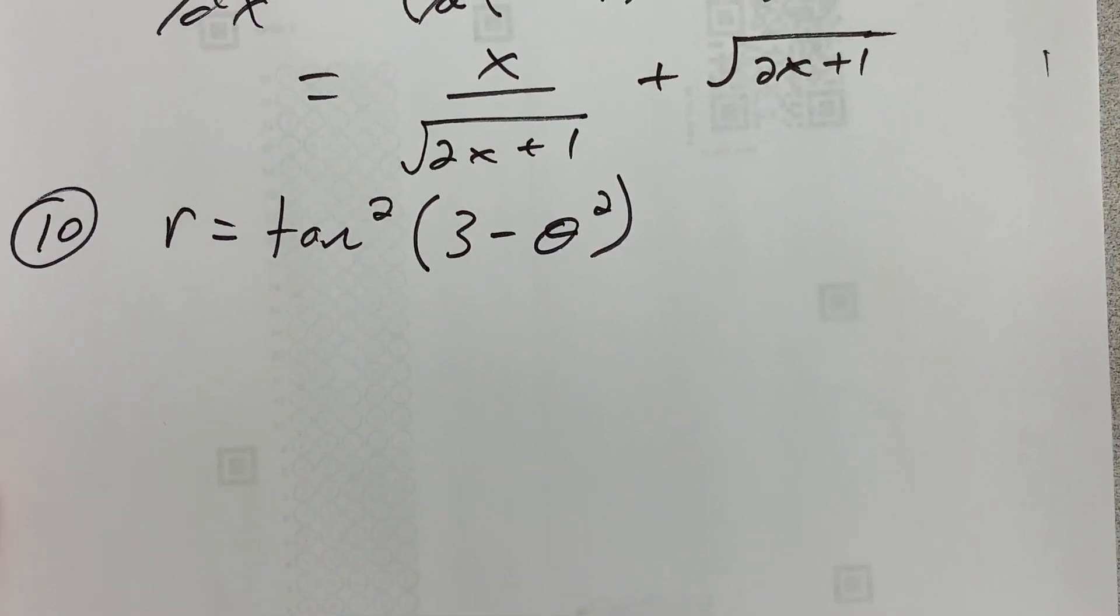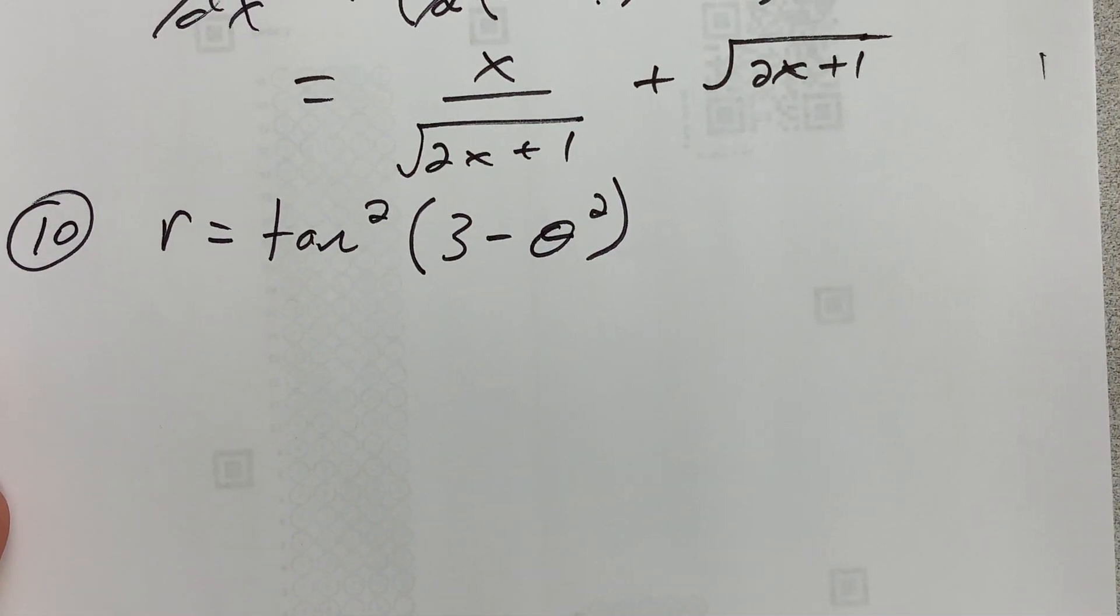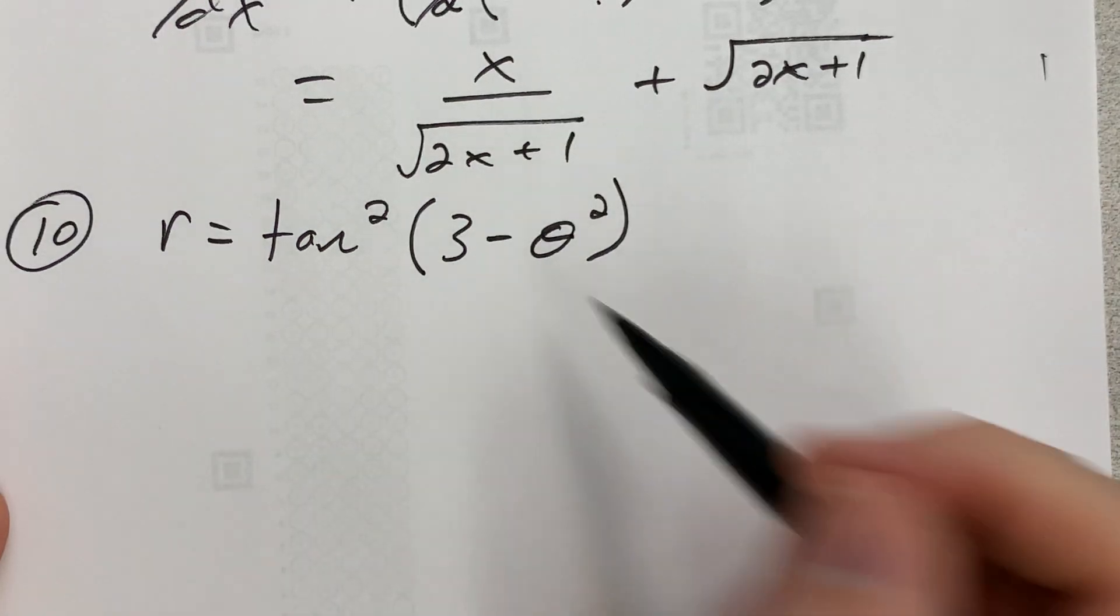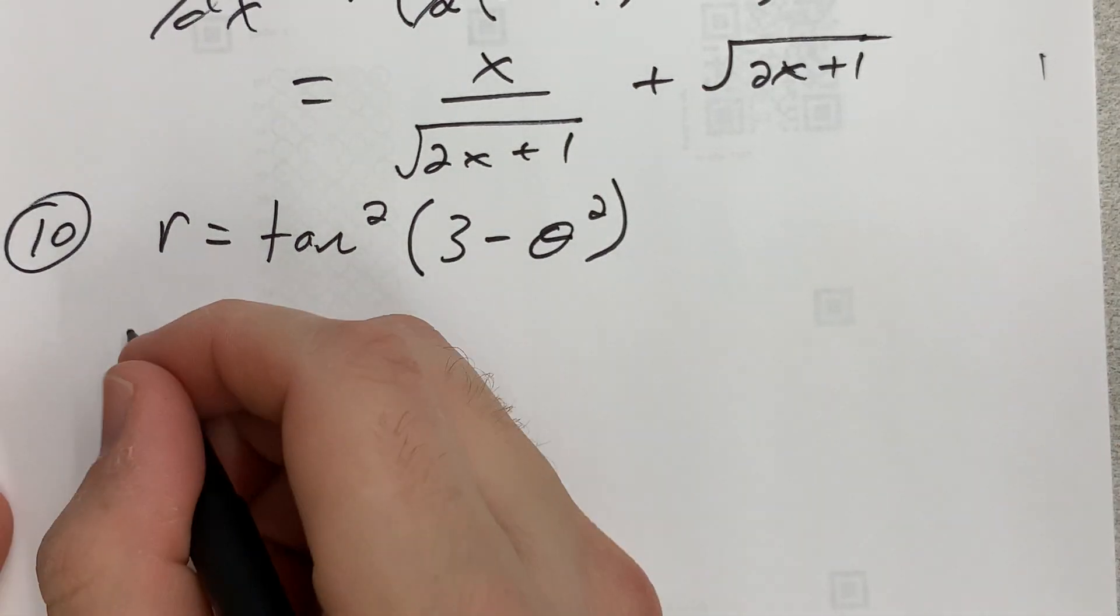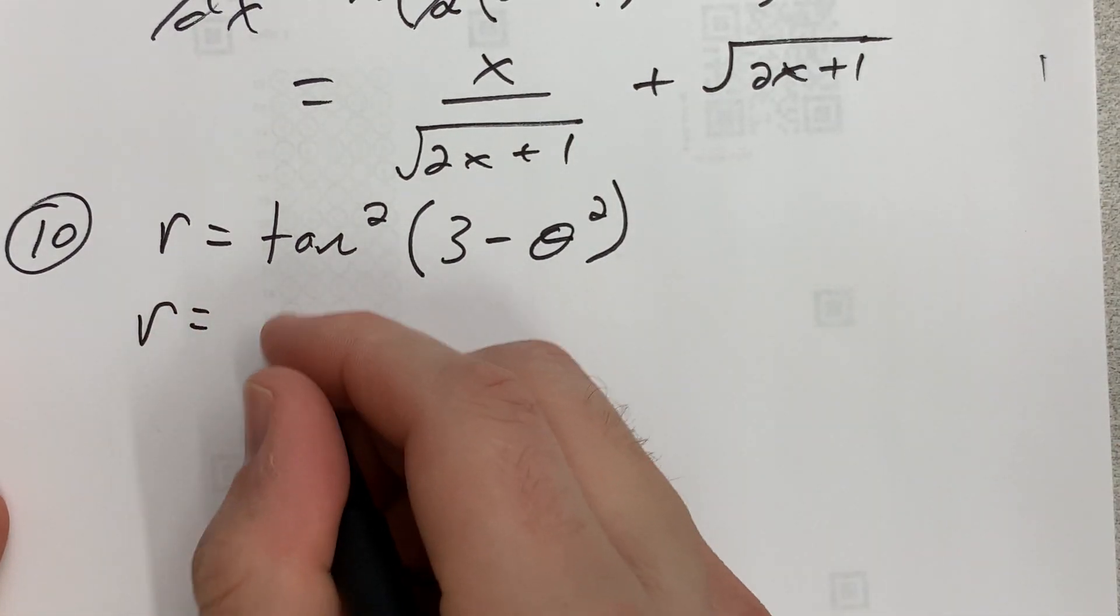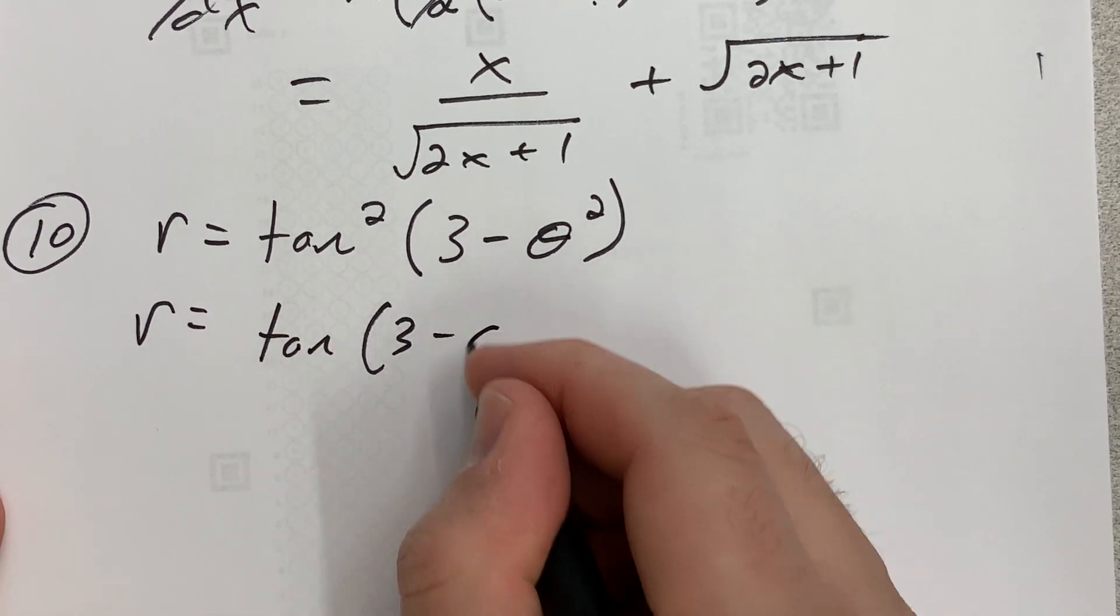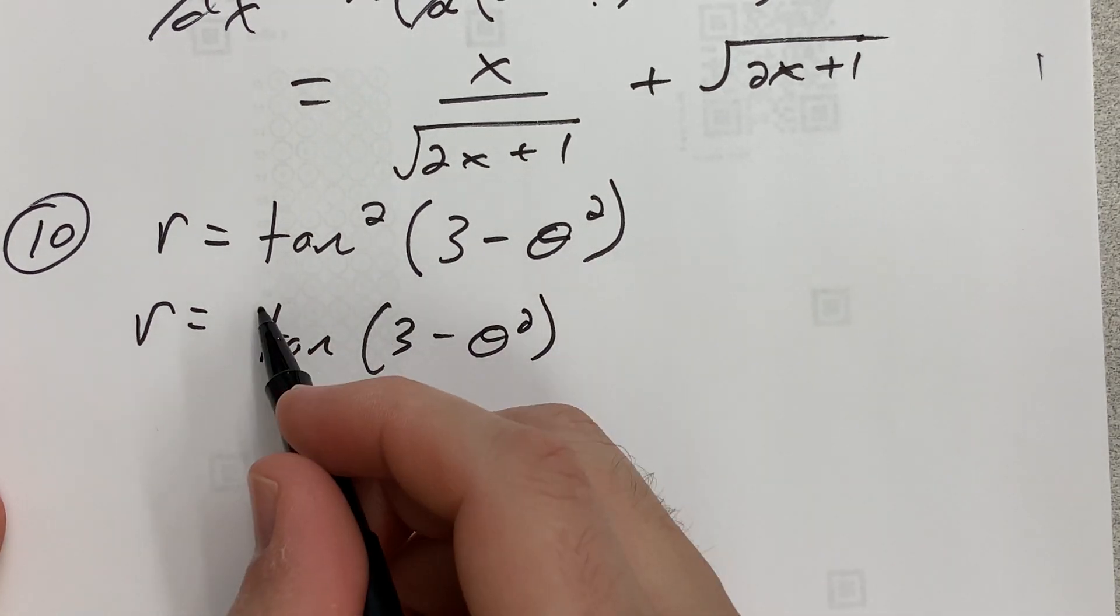So we have a chain rule—we're gonna have the chain rule applied twice I think. This is going to be r equals—remember I'm thinking of this as (3 - θ²) as tangent squared.